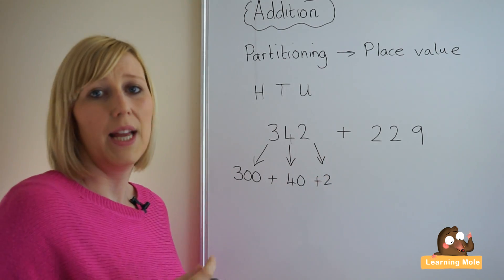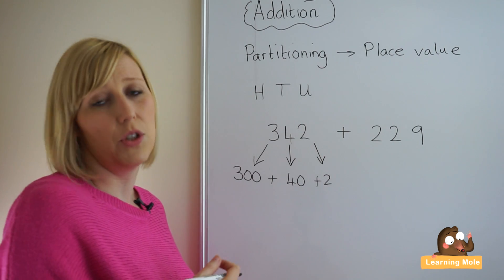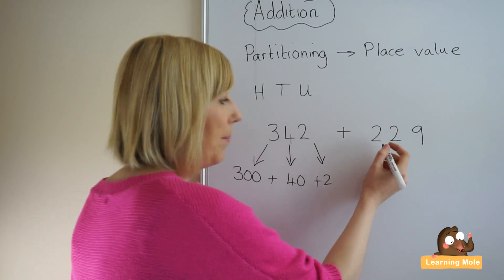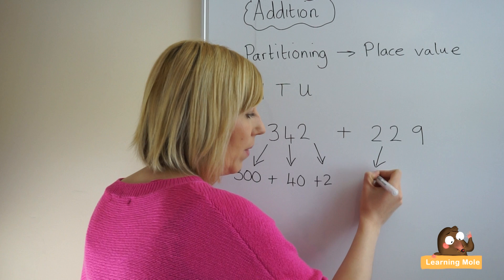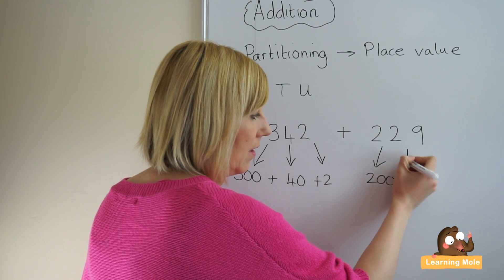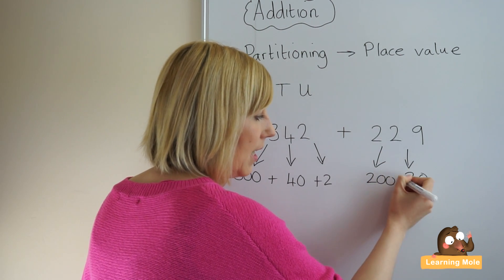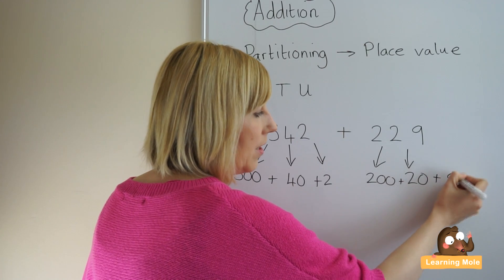And most children at the level that will be using this strategy will be able to do this no problem. Then partitioning our next number, we have 200 plus 20 plus 9.